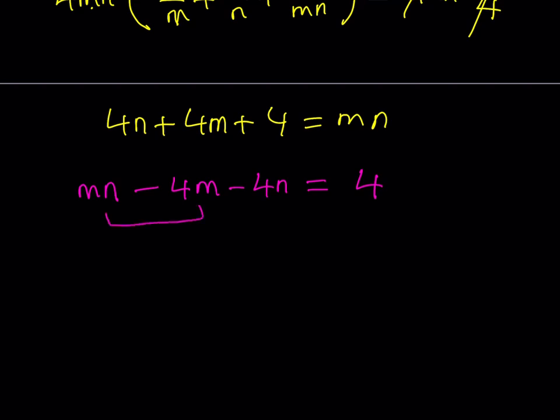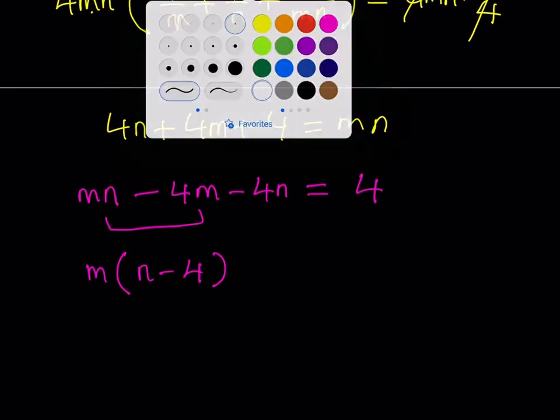So I'm going to start with the first two terms and look for a common factor. Obviously that's m. And if I take that out, inside I have n - 4. And then what follows this is -4n. Now notice that inside the parentheses here, inside the parentheses here, I have n - 4. So I'd like to get that expression again. But notice that there is a -4 in front of n here. So I'm going to put the -4 here and keep the n inside the parentheses. So far this is basically our original expression, right? We haven't really added or subtracted anything.